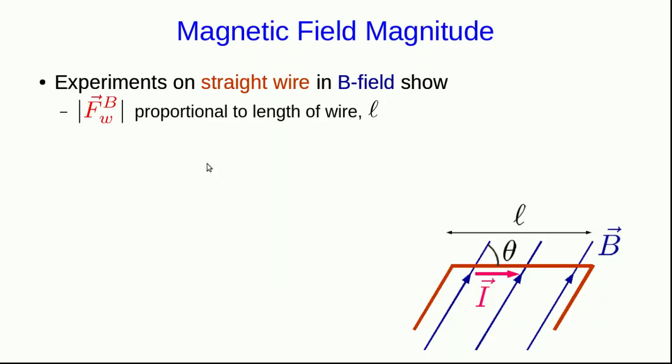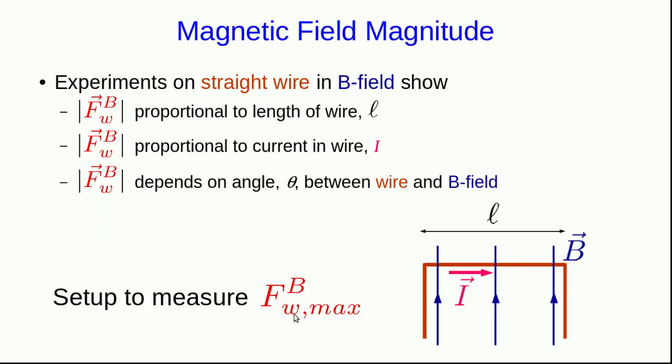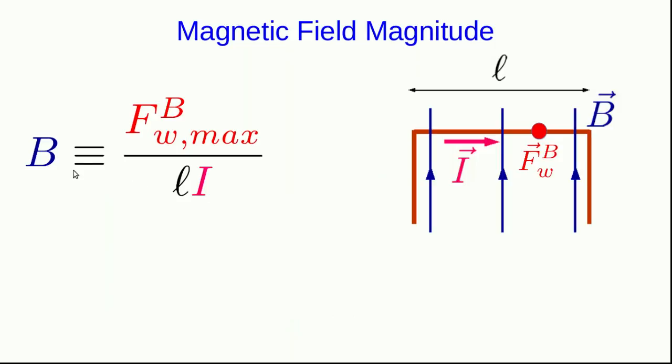An experiment shows that that force would be proportional to the length of this wire segment, and also to the amount of current running through it. And we've already seen that that force depends on the angle theta between the wire and the magnetic field, with the maximum occurring when they're perpendicular. And so to keep our definition simple, we're going to work with the maximum possible force, which is when the wire is perpendicular to the B field. At that point, we can define our magnetic field strength as the force on the wire, divided by the length and the current in the wire.